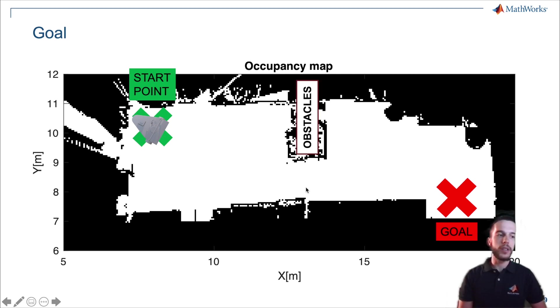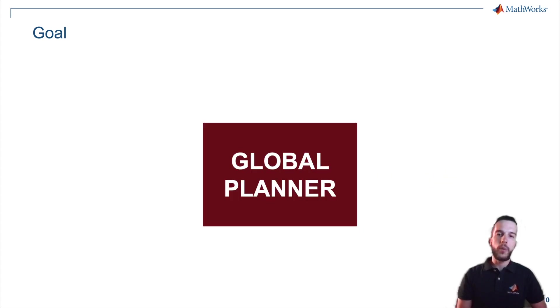This must also take into account the possible obstacles on our path. Our final result would be something like this. So what is our global planner more specifically?